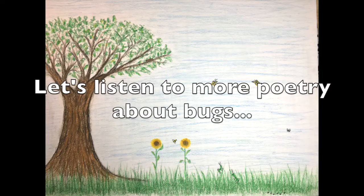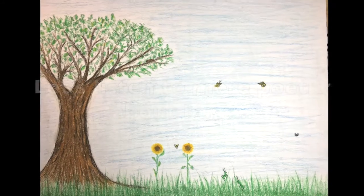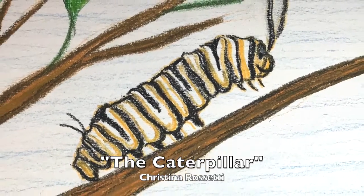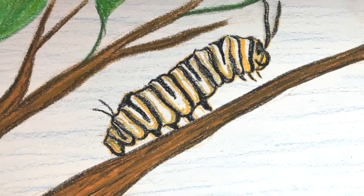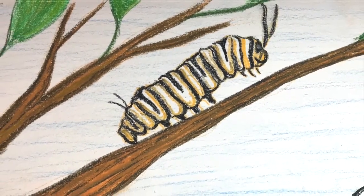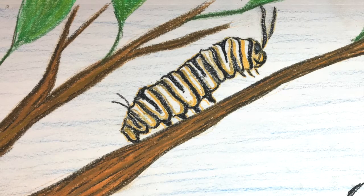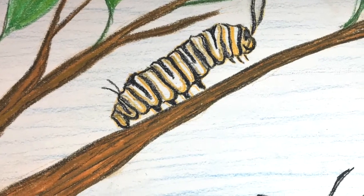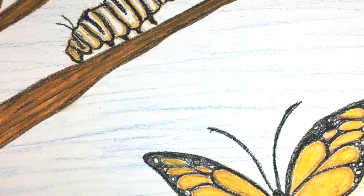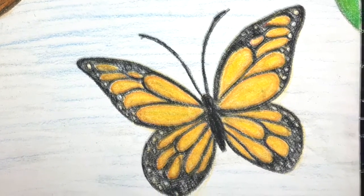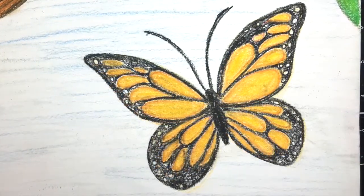Let's listen to more poetry about bugs. The caterpillar by Christina Rossetti. Brown and furry, caterpillar in a hurry, take your walk to the shady tree or stalk, or what not, which may be the chosen spot. No toads spy you. Hovering bird of prey pass by you. Spin and die to live again as a butterfly.